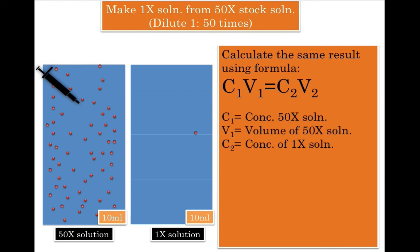And V2 is volume of 1X solution which is 10 ml in our case. In all these four quantities, that is C1, V1, and C2, V2, V1 is the one which is not known.